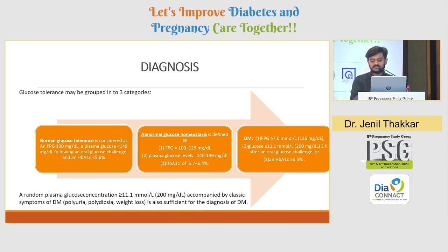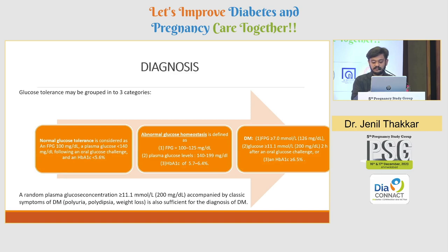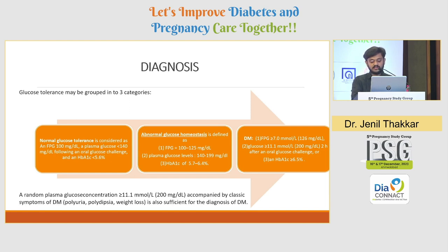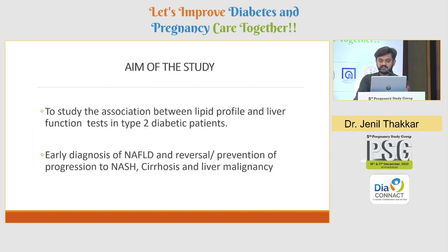Diabetes mellitus is diagnosed with fasting blood glucose more than 126 mg/dL, blood glucose more than 200 mg/dL two hours after an oral glucose challenge, or A1c of more than or equal to 6.5%. Additionally, a random plasma glucose concentration of more than 200 mg/dL accompanied by classic symptoms — polyuria, polydipsia, and weight loss — is also sufficient for the diagnosis of diabetes mellitus.